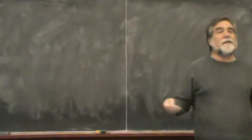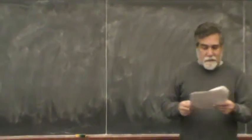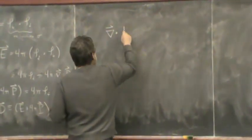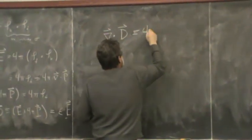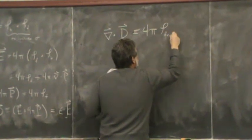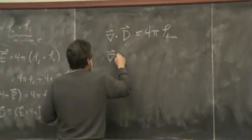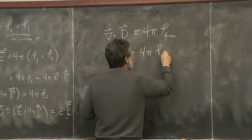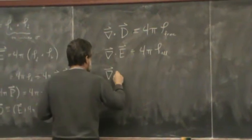Now I can write down a bunch of new Maxwell's equations using this D field that came from that new definition. I'll rewrite the one that I just wrote down there. Divergence of the D field, the displacement field, is 4 pi rho free. The divergence of the electric field is 4 pi rho all. This one's still completely true.